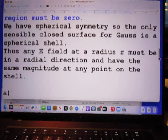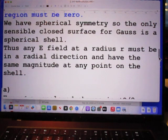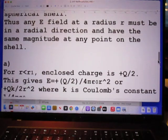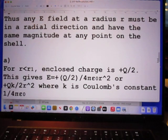We have spherical symmetry, so the only sensible closed surface for Gauss is a spherical shell. Thus any electric field at a radius R must be in a radial direction and have the same magnitude at any point on the shell.